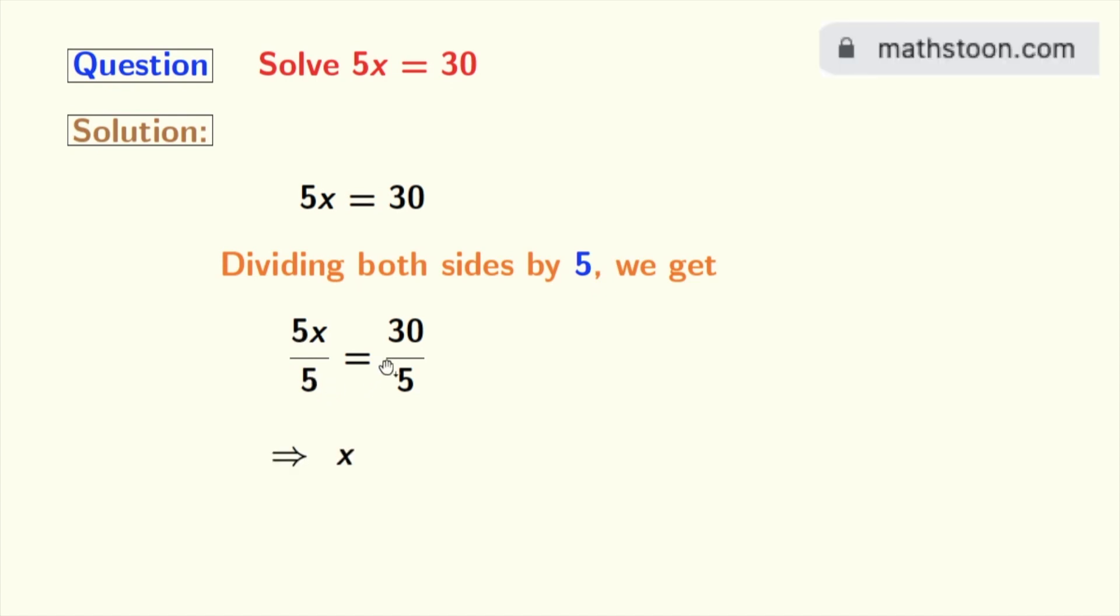And on the right hand side, we have 30 divided by 5, which is 6. So finally, we get x equals 6 as our answer.